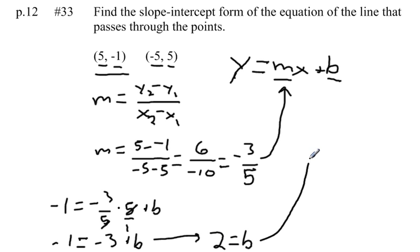So there's the second piece of information that we can plug in here. So once I do that, I've got my final answer. I'll write it down here. y equals negative 3 fifths x plus 2. So there's the equation of the line in slope-intercept form that passes through these points.